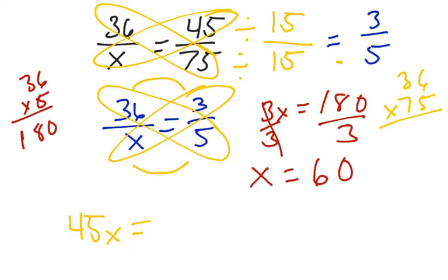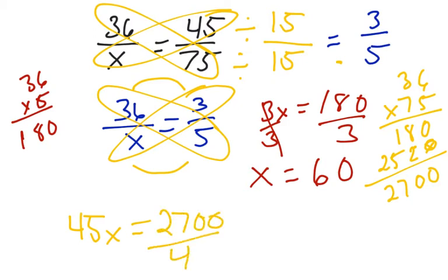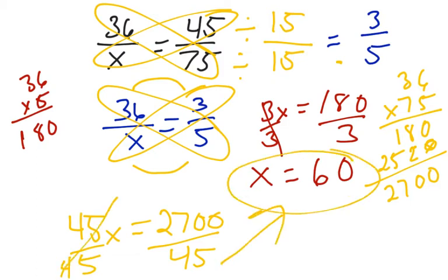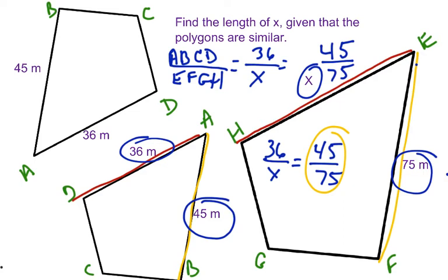which would give us 180. Then we'd hold our spot, which would give us 252, and then we would add and get 2700. So we'd have 45 times something is 2700. Divide both sides by 45, and we would still get X equals 60.